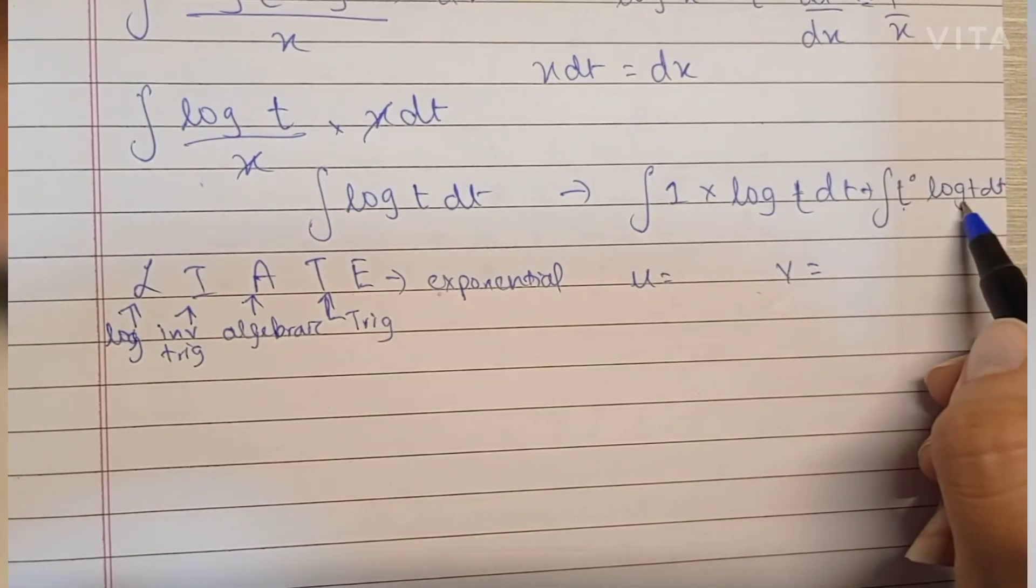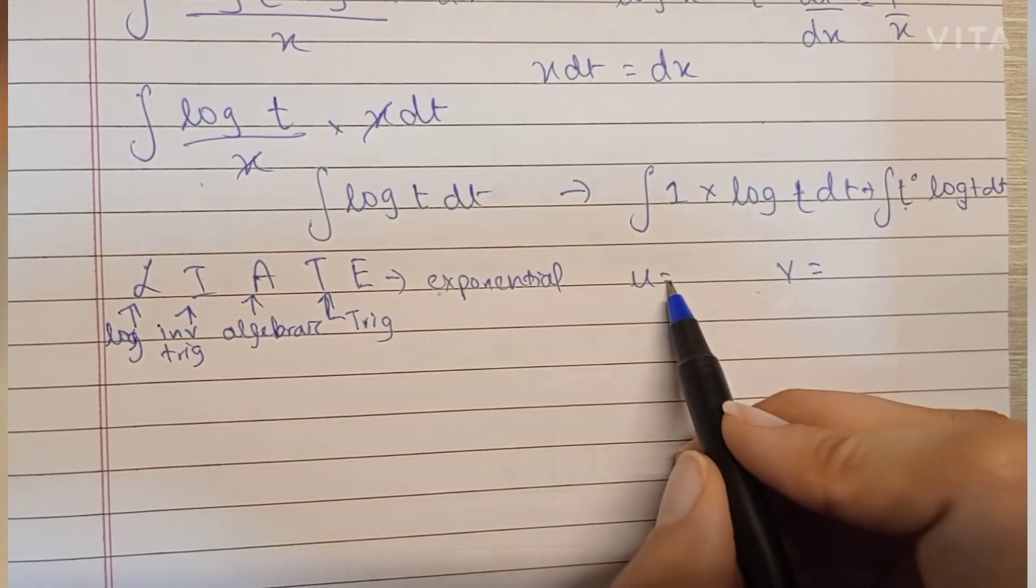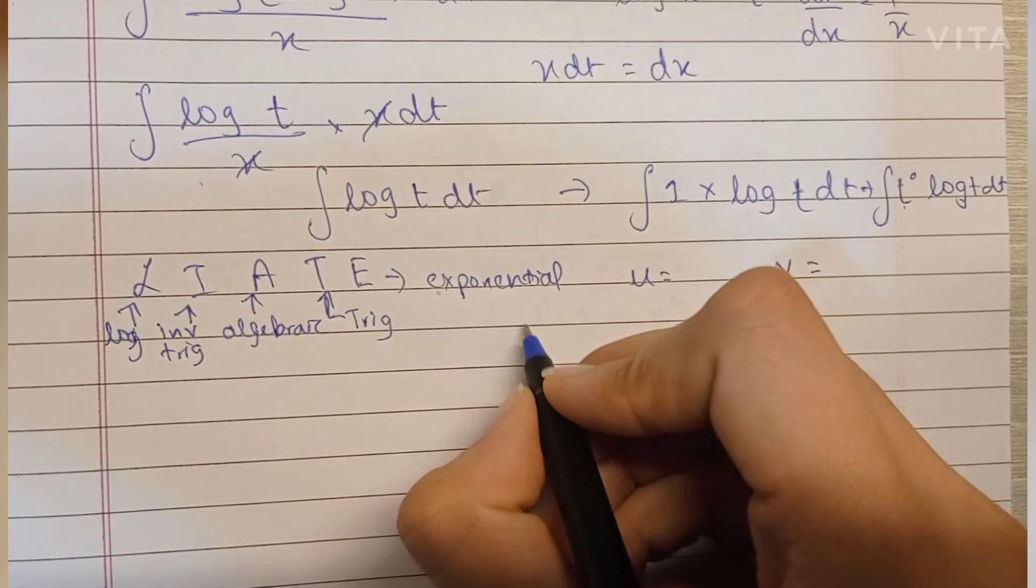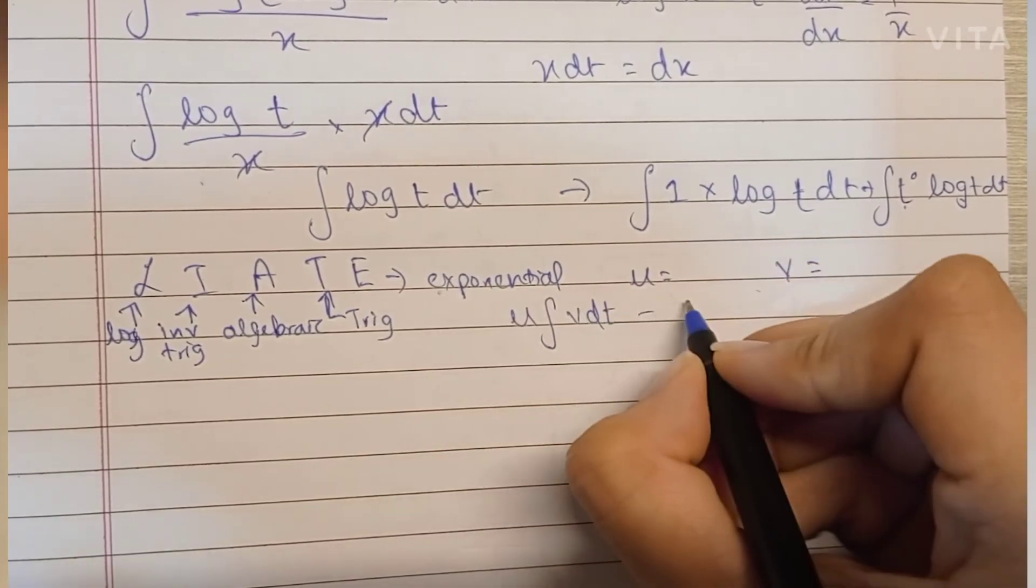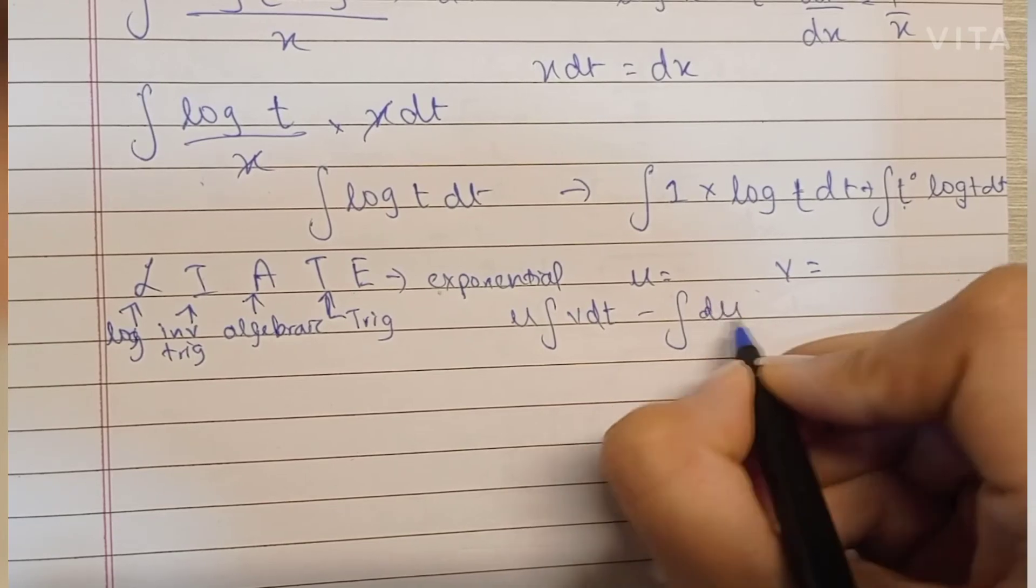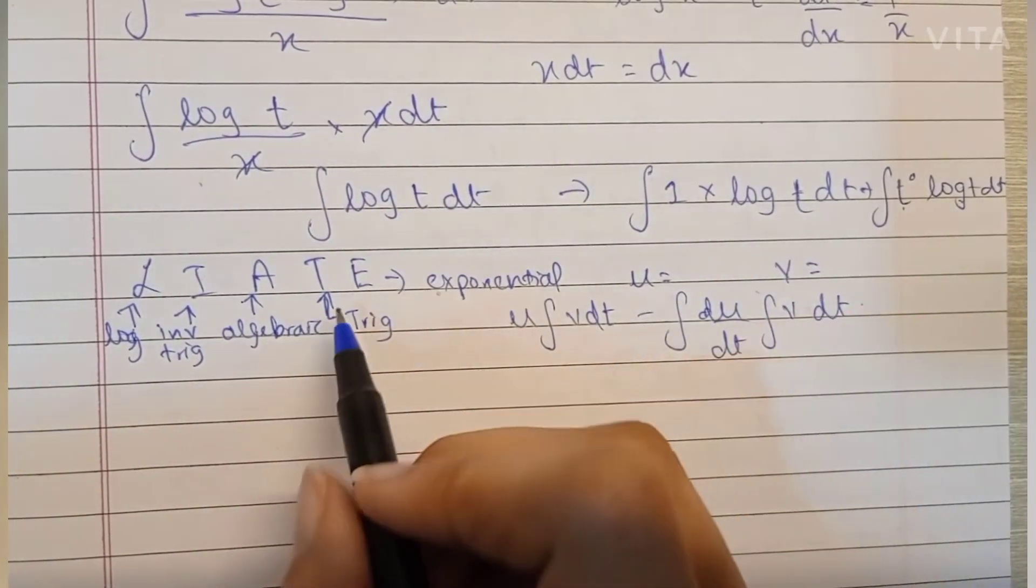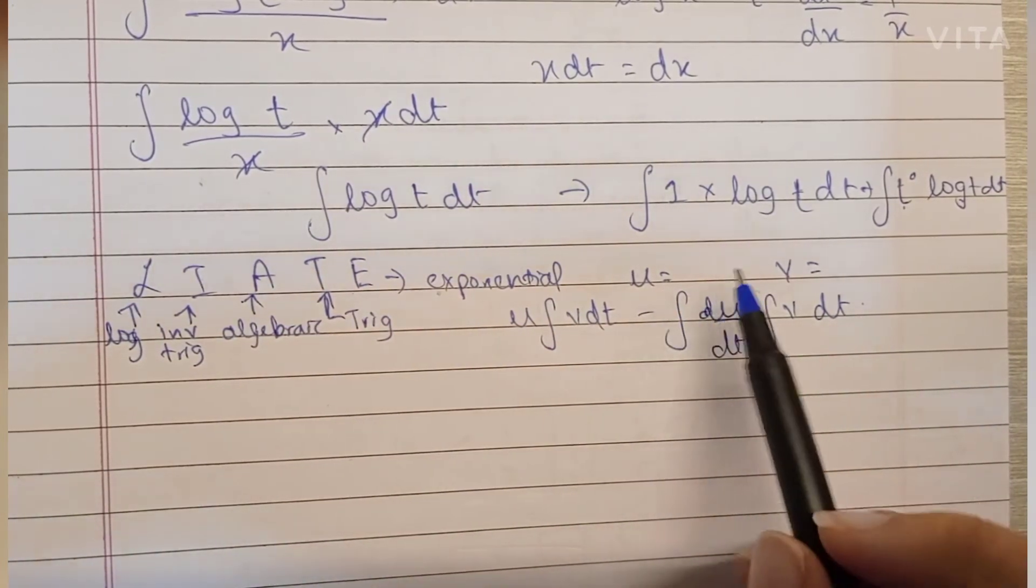Now let's use the by-parts rule. We have two terms in the integral: t raised to 0 and log t. The ILATE rule will help us decide which term is the u term and which is the v term. The by-parts formula is u into the integration of v, here dt, minus the integration of differentiation of u into the integration of v.